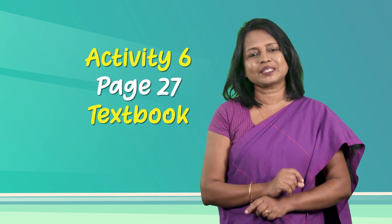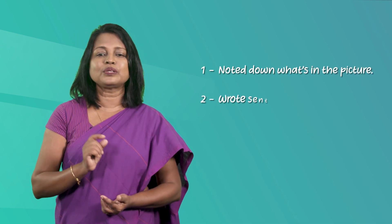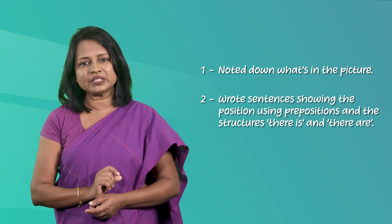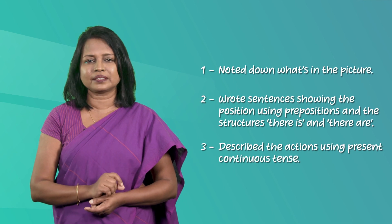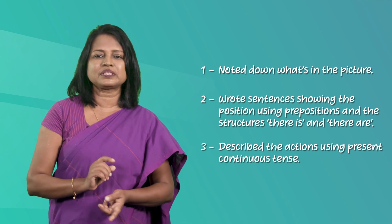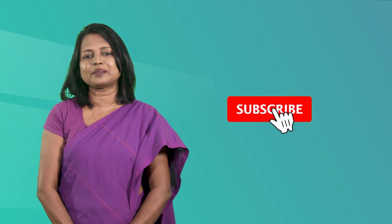Okay children, now I want you to do an activity on your own. With the help of what I have taught you in this lesson, describe the picture in Activity 6 on page 27 of your textbook. That marks the end of today's lesson. In this lesson we practiced how to describe pictures in three steps: first we noted down what's in the picture, then we wrote sentences showing position using prepositions and the structures 'there is' and 'there are,' and in the third step we described the actions using present continuous tense in both active and passive voice. Next time we'll do a reading lesson. Hope you enjoyed the lesson. Don't forget to subscribe to this channel. Goodbye.